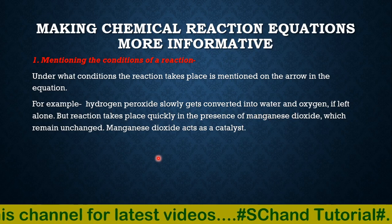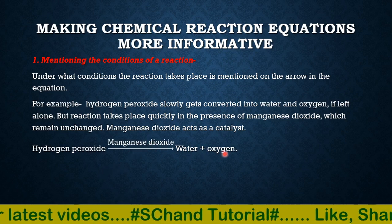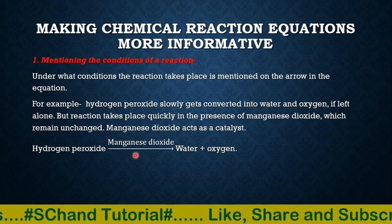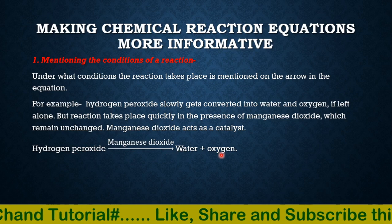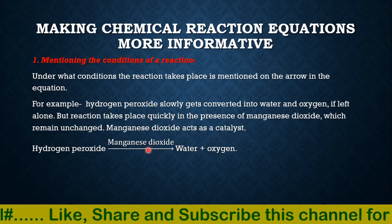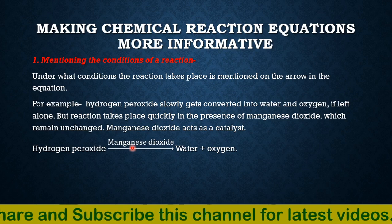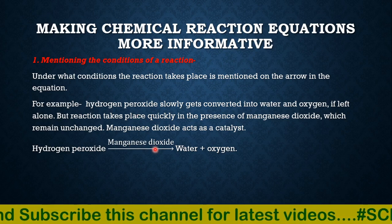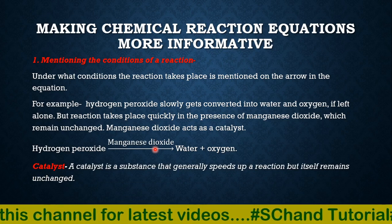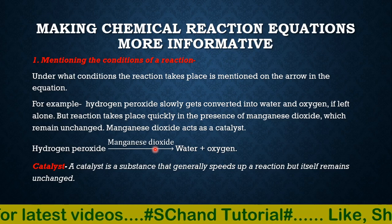Another example: hydrogen peroxide slowly converts into water and oxygen when left alone, but the reaction takes place quickly in the presence of manganese dioxide, which remains unchanged — manganese dioxide acts as a catalyst in this case. So we write manganese dioxide above the arrow to make the equation more informative. A catalyst is a substance that generally speeds up the reaction while itself remaining unchanged — it is not taking part in the reaction, it just increases the rate of reaction.